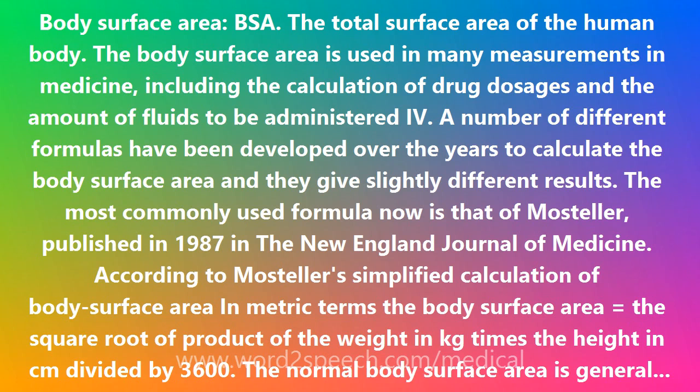The normal body surface area is generally taken to be 1.7 square meters. In actual fact, the body surface area depends on more than just height and weight. Other influential factors include the age and gender of the individual.